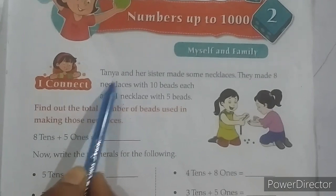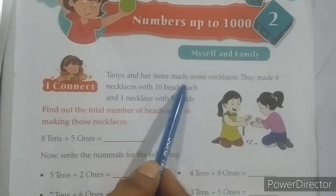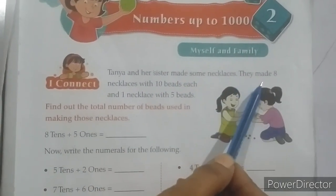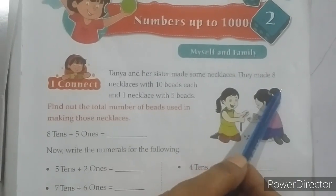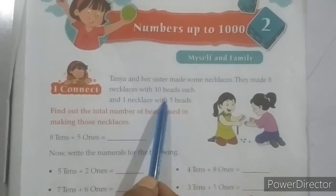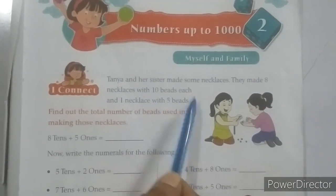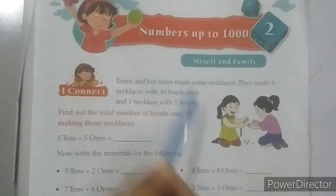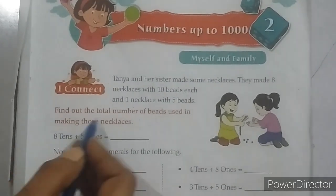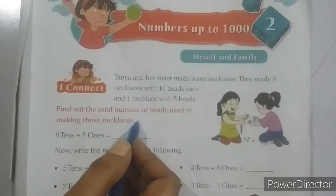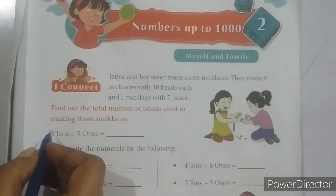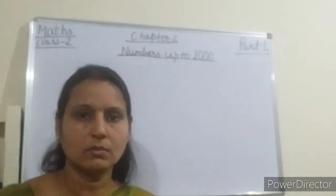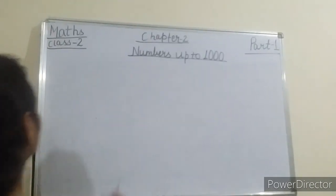Tanya and her sister made some necklaces. They made 8 necklaces with 10 beads each and 1 necklace with 5 beads. Find out the total number of beads used in making those necklaces.